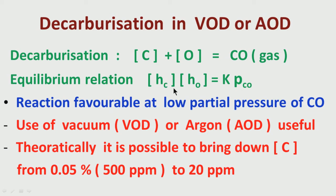So, for a particular level of oxygen, the carbon amount in solution will also come down. This is the principle of controlling carbon — the technique by which decarburization can take place. For a particular amount of oxygen in liquid steel, the carbon solubility can be brought down at a particular temperature, when K is constant, by reducing the partial pressure of carbon monoxide.